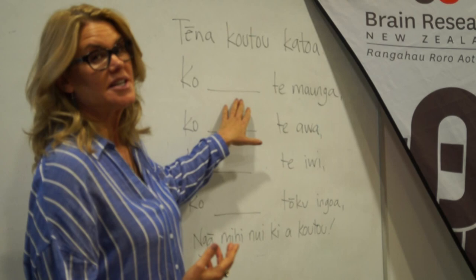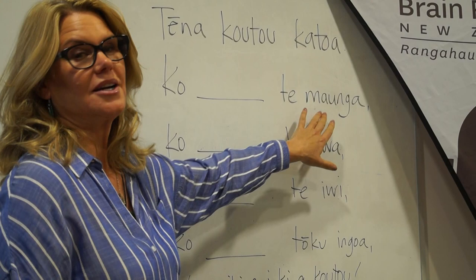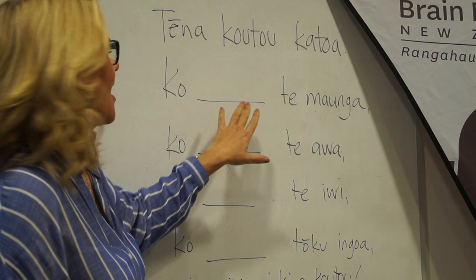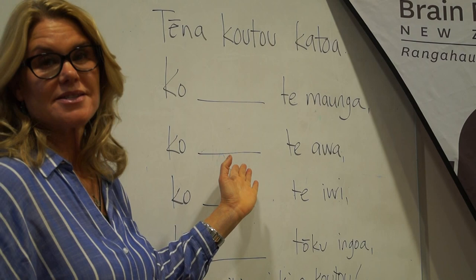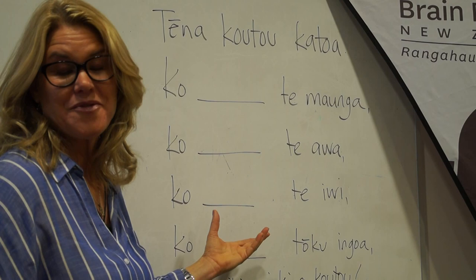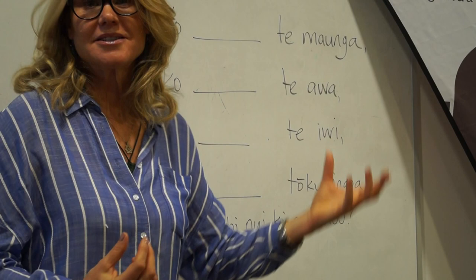So the word Tāwhiti Rahi goes in this spot of the structure. The kūpu Māori for mountain is maunga, so you would just include the word for the name of your mountain in this spot here. Similarly, I said ko Awapaka te awa. So the name of a river that's important to you goes in this space here. And the people that you're descended from — for me, Te Aupōuri is one of my iwi.